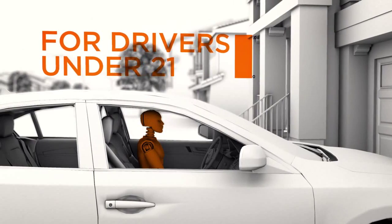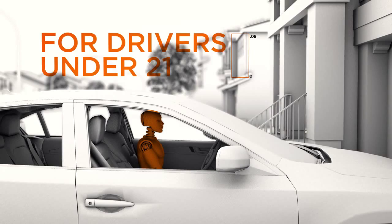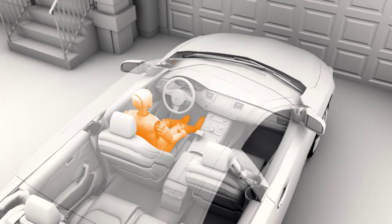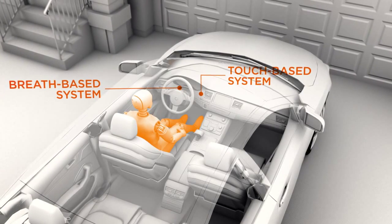For drivers under 21, for whom any amount of blood alcohol is illegal, the system can be programmed for a zero tolerance policy. To get an accurate, reliable reading, two technologies are being explored: a breath-based system and a touch-based system.